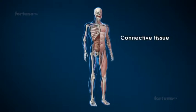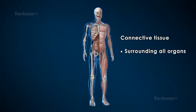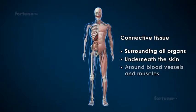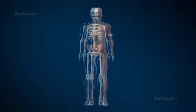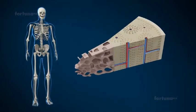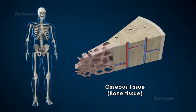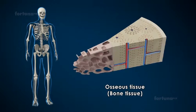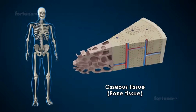Connective tissue can be found surrounding almost all organs in the body, underneath the skin and around blood vessels and muscles. Osseous tissue, or bone tissue, is the structural and supportive connective tissue. This tissue makes up the skeletal system.